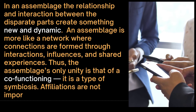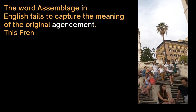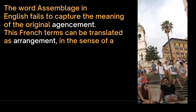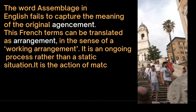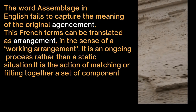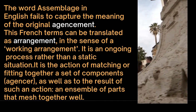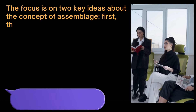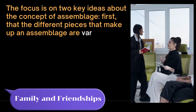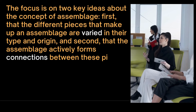It is a type of symbiosis — affiliations are not important here, but alliances. The word assemblage in English fails to capture the meaning of the original French term agencement, which can be translated as arrangement in the sense of a working arrangement. It is an ongoing process rather than a static situation — the action of matching or fitting together a set of components, as well as the result of such an action: an ensemble of parts that mesh together well. The focus is on two key ideas: first, that the different pieces making up an assemblage are varied in their type and origin; and second, that the assemblage actively forms connections between these pieces.